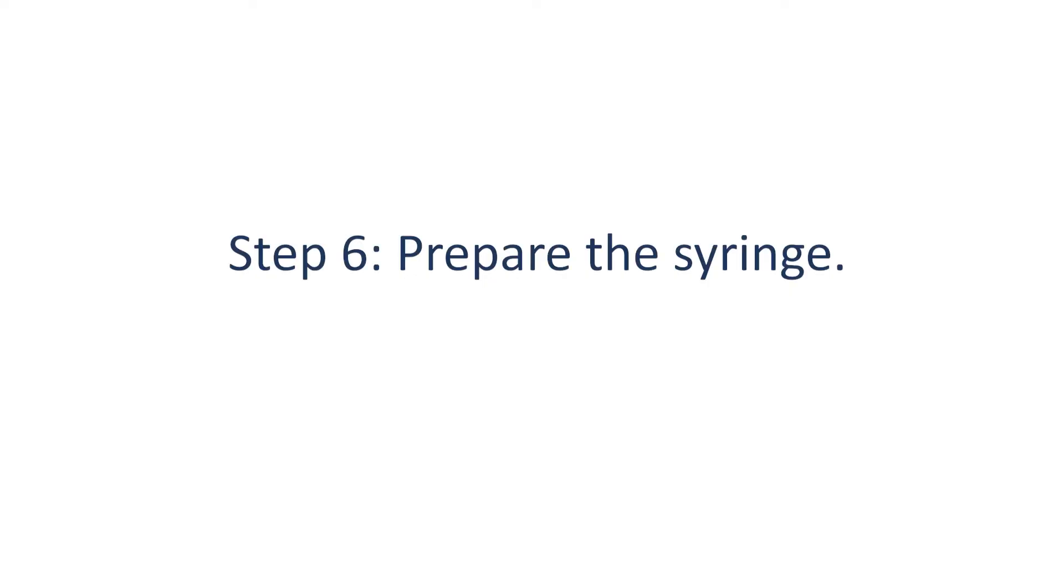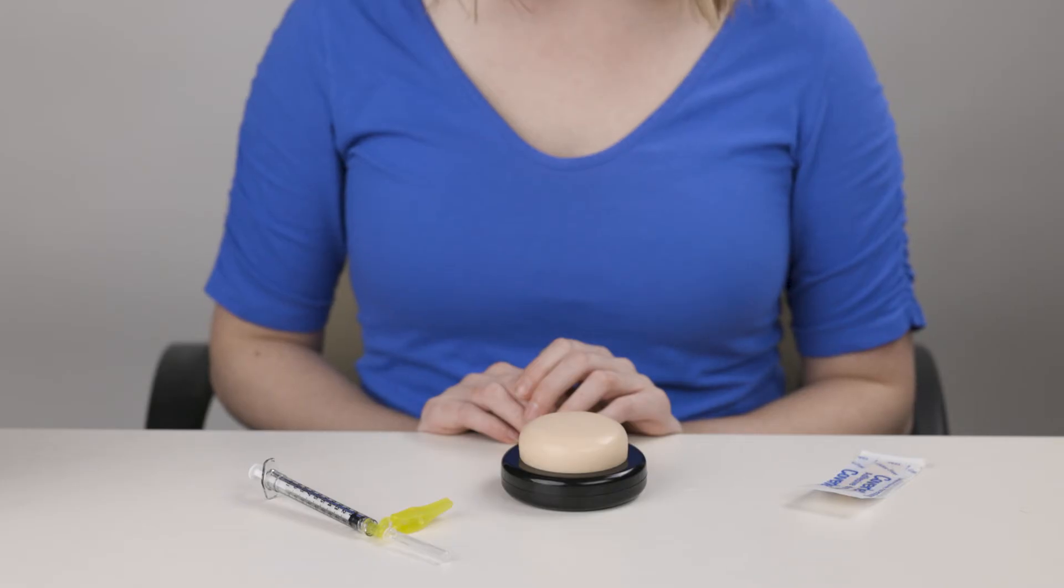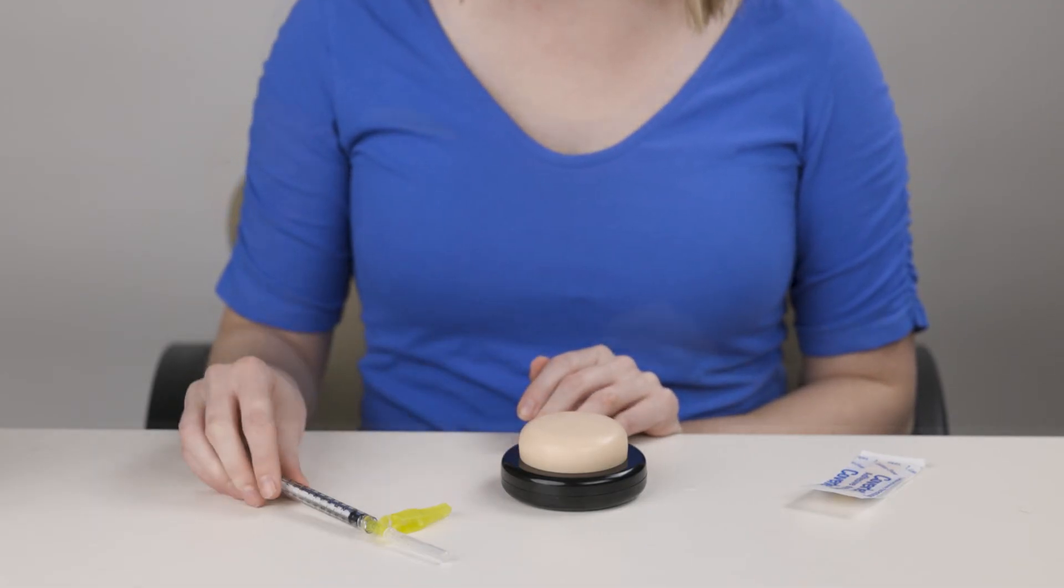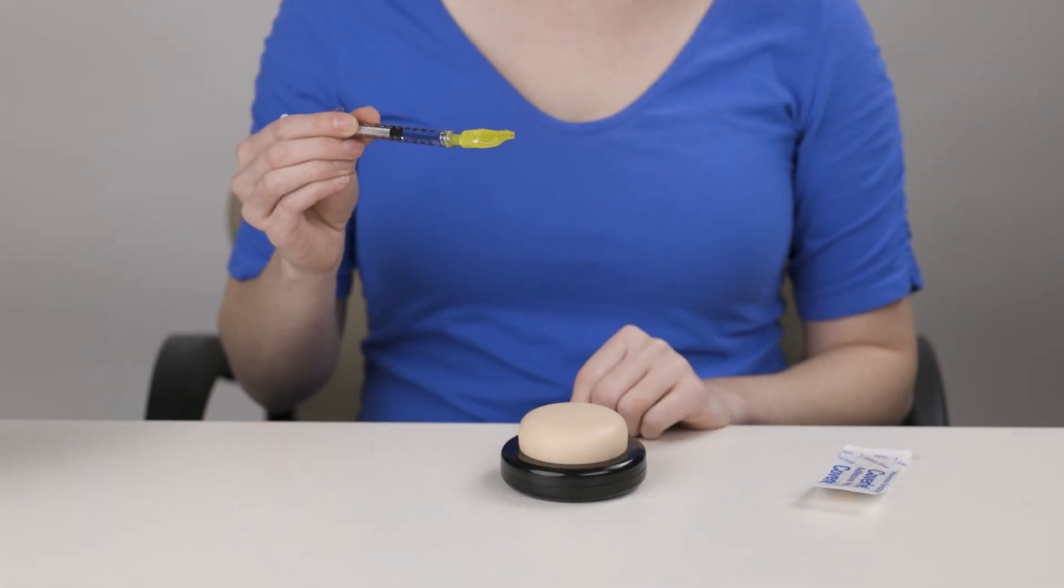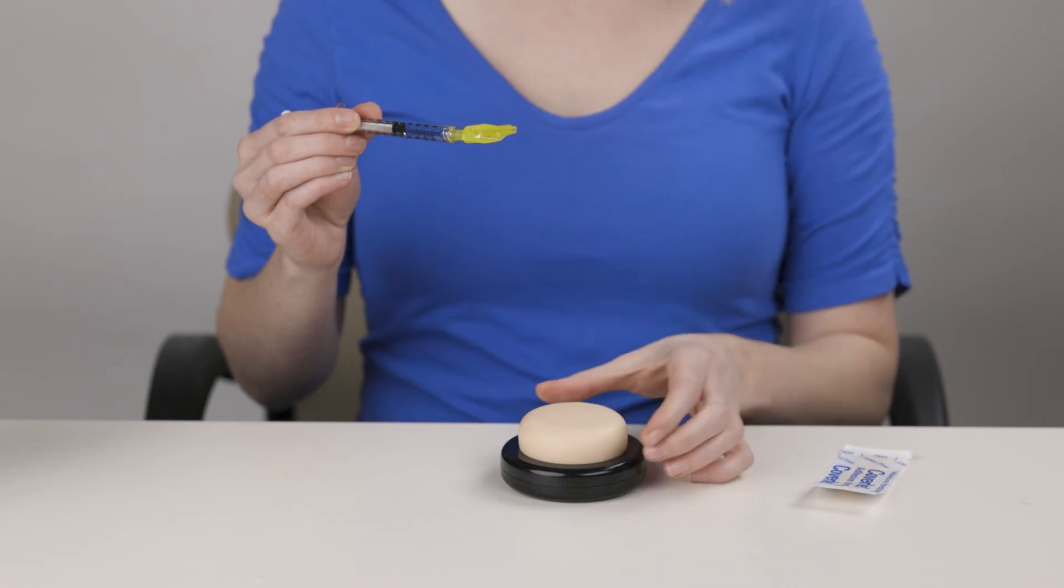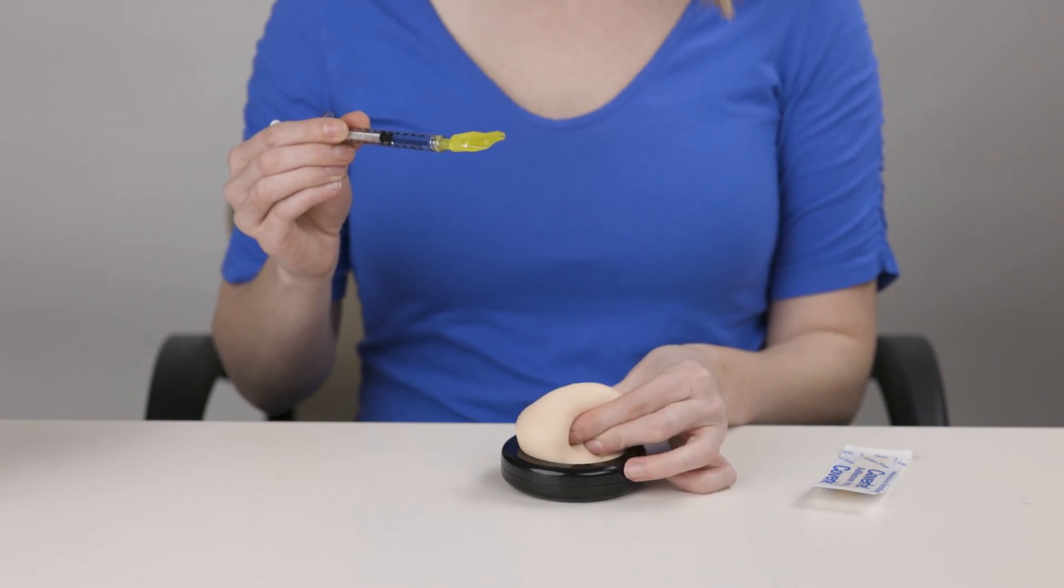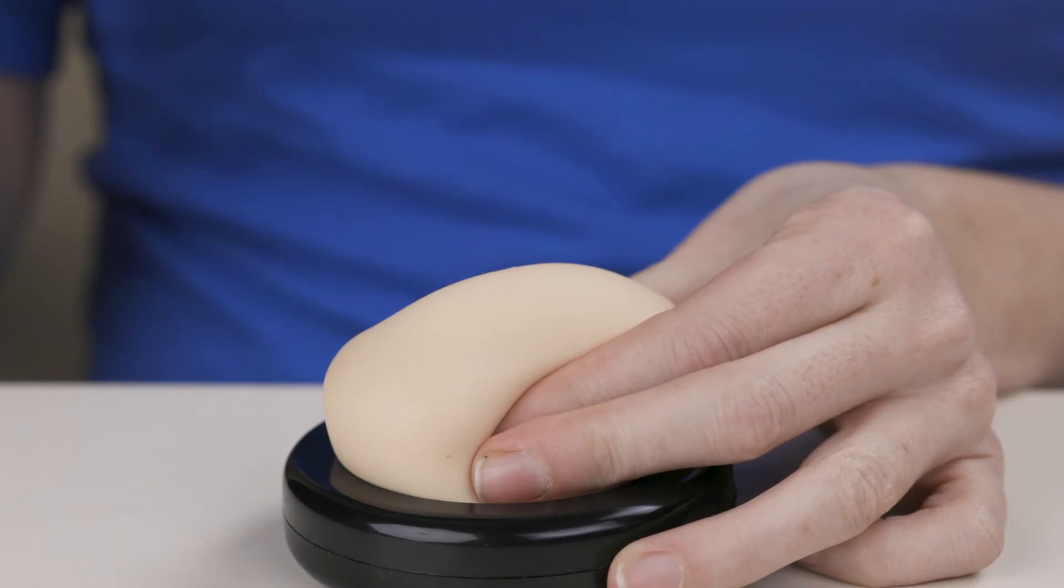Step six, prepare the syringe. Using your dominant hand, which is the hand that you write with, hold the syringe around the middle like a pen or dart. With your other hand, gently pinch 2 to 3 inches of skin and fat tissue.